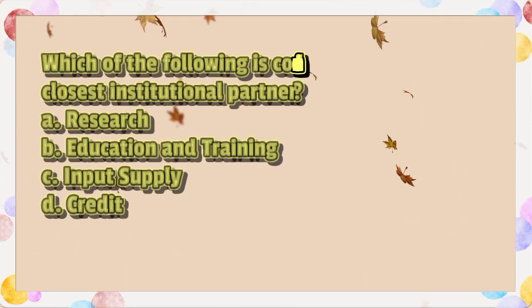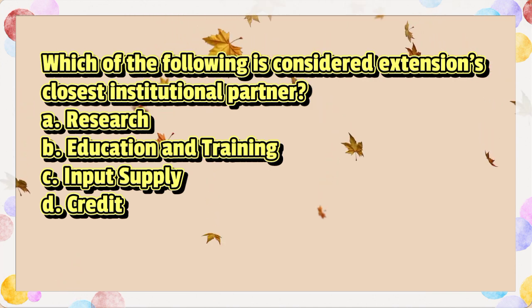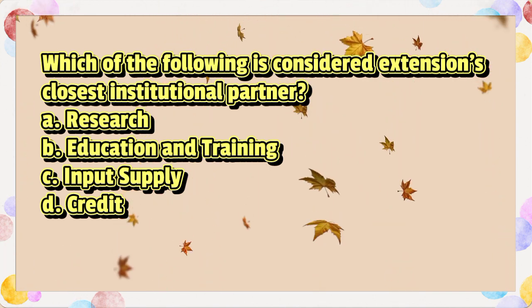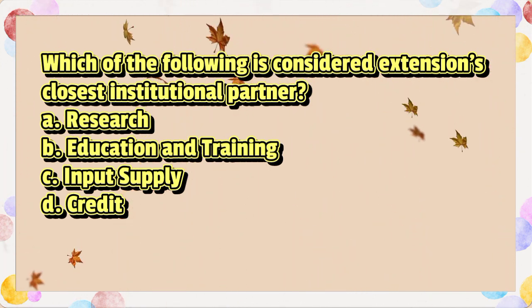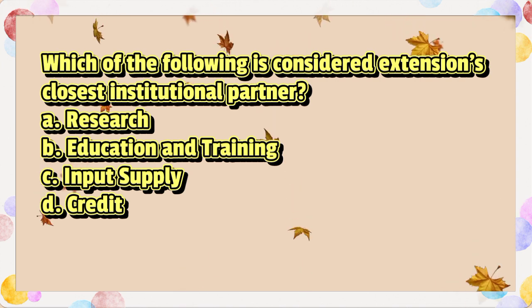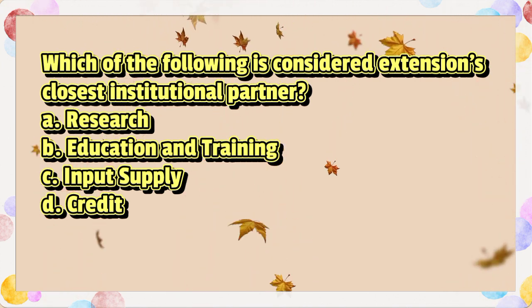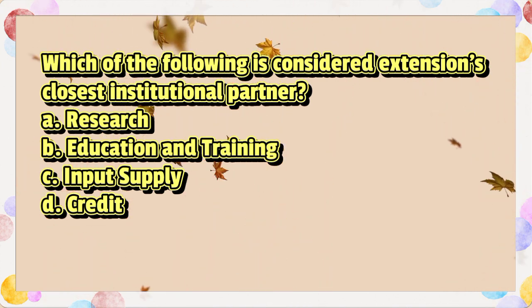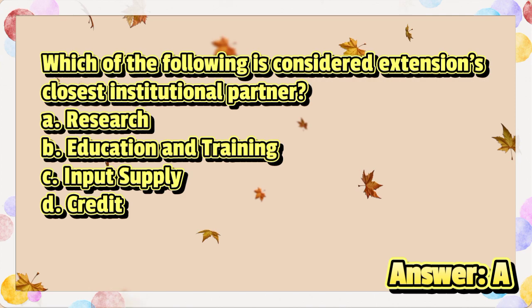Which of the following is considered extension's closest institutional partner? A. Research. B. Education and training. C. Input supply. D. Credit. The answer is letter A.